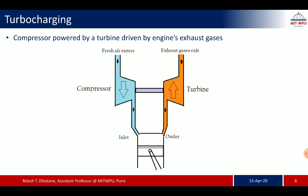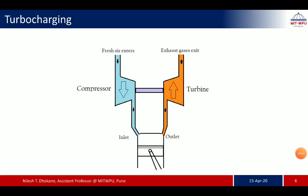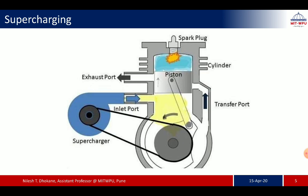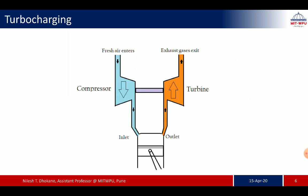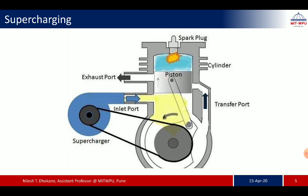Now we will discuss the differences between supercharging and turbocharging. Turbocharging is a forced induction system that compresses atmospheric air and sends it to the engine cylinder. Similarly, a supercharger is also a forced induction system that compresses atmospheric air and delivers it to the engine cylinder — but it takes power from the same crankshaft. In turbocharging, exhaust gases provide the energy, whereas in supercharging, energy is taken from the crankshaft.